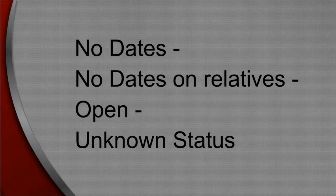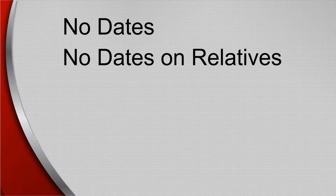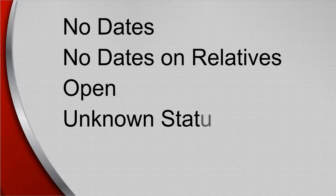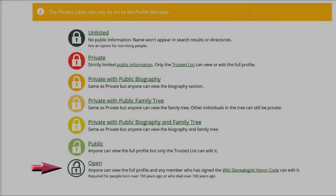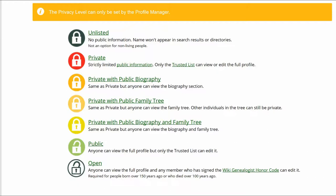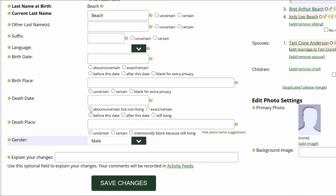First, let's discuss the name of this suggestion. There are no birth or death dates for this profile, and no birth or death dates for any of this profile's relatives. It is an open profile, meaning anyone can edit it. Unknown status means it's not known if this person is still living. If the birth date is determined to be less than a hundred years ago, be aware that the profile will automatically change from open to locked, and unless you are the manager, you will be unable to proceed. Check the uncertain but non-living box first in the death field to prevent this.